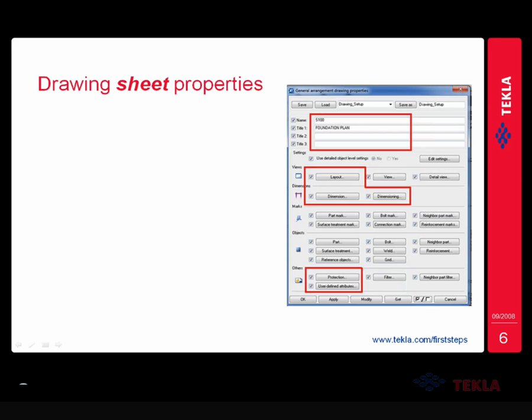The drawing sheet properties - also called the general arrangement drawing properties - are set up through a dialog box. As customers, you know that there are a lot of dialog boxes available and it can be overwhelming for new users to know what they actually have to set up. What we've shown here with the dialog boxes circled in red are really the key dialog boxes you need to be working with in setting up and creating your drawing sheets. That's the name and titles, the layouts, dimensions, dimensioning, and the protection and user-defined attributes.